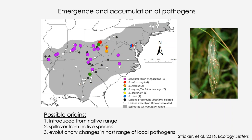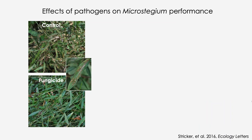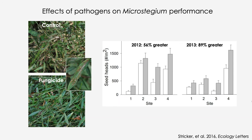It's also possible that as the distribution and abundance of Microstegium increased, the invader intersected with native species that hosted these pathogens, resulting in spillover from the native species onto the invader — Bipolaris is a common pathogen of grasses, turf grasses, and even corn. There could also have been evolutionary changes in the host range of local pathogens. A simple experiment at four sites in West Virginia, applying water control or fungicide to reduce disease, showed that seed production was 56% greater in 2012 and 89% greater in 2013 in fungicide plots, suggesting the pathogen was suppressing reproduction.